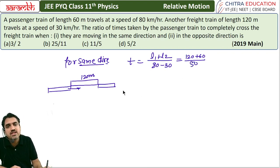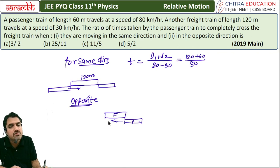Now if we talk about opposite direction. In opposite direction, this is your freight train and this is your passenger train. In opposite direction they will cross.